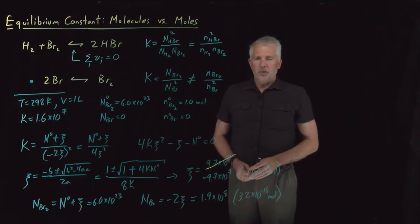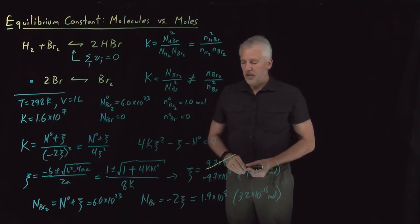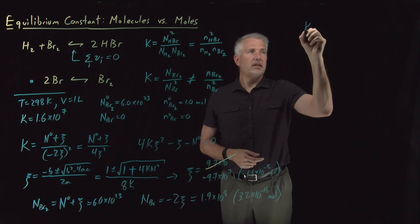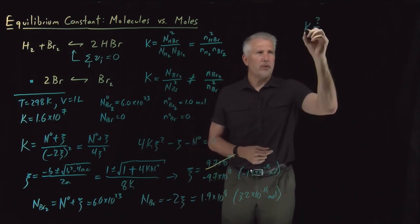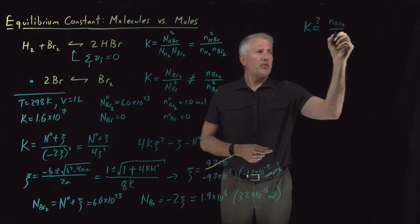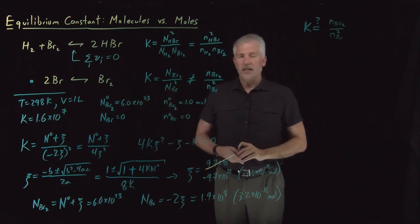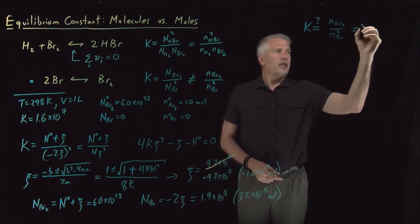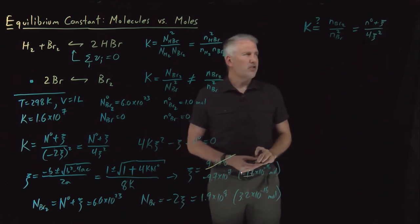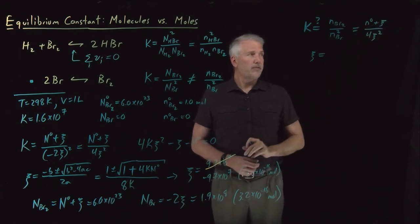We've worked that example to illustrate why we can do the problem in terms of molecules but not in terms of moles. Let's redo it with moles. If we write K (with a question mark) equal to moles of Br₂ over moles of Br squared, the algebra works out exactly the same structure: (n₀ + ξ) / (−2ξ)² = K, giving the same form of quadratic — but now the extent of reaction ξ is in moles instead of molecules.